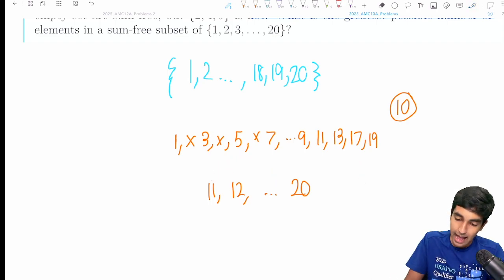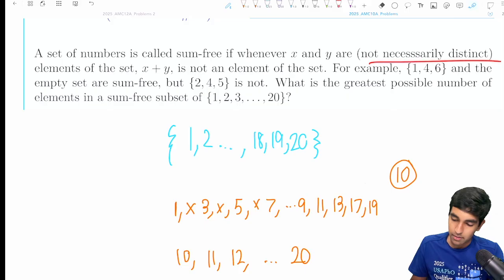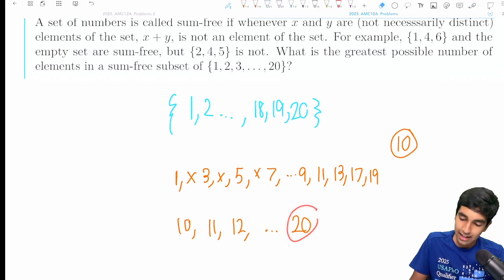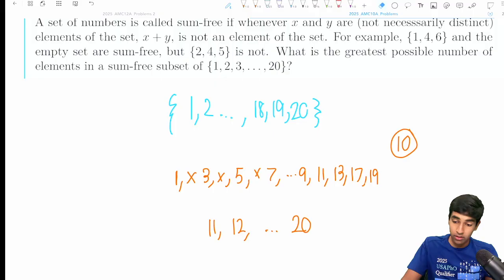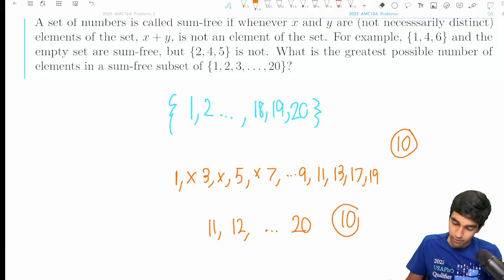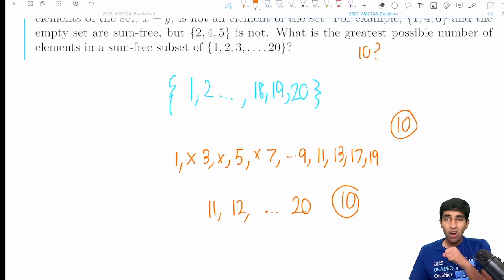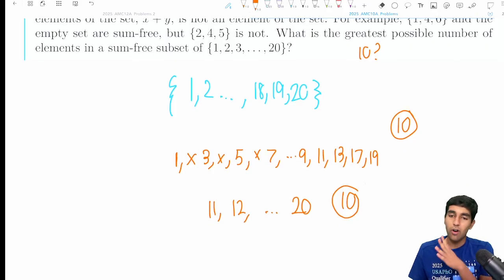But if we added a 10, then you would have 10 plus 10 - remember, it does not have to necessarily be distinct - would be 20. That's why we can't add the 10. This is another construction for 10. So is 10 our answer? In the real contest you'd be pretty confident it's 10 and just move on.